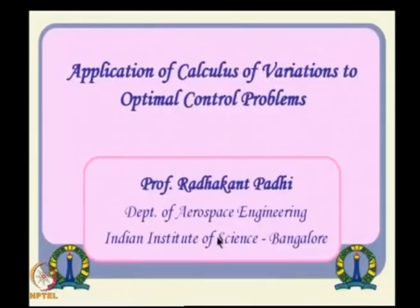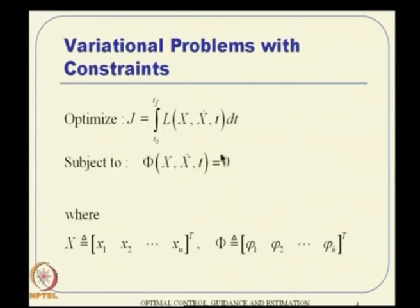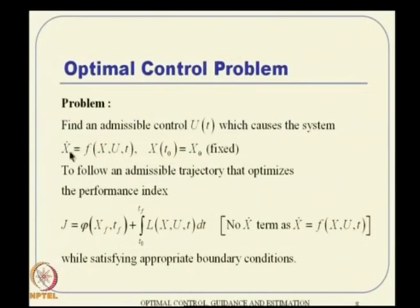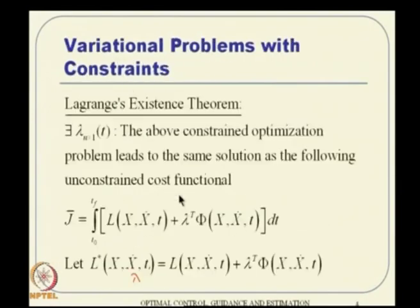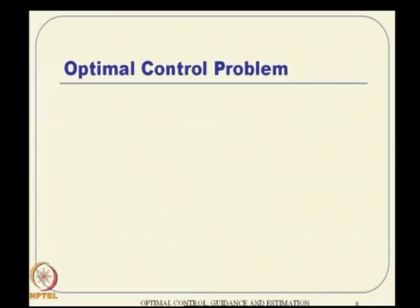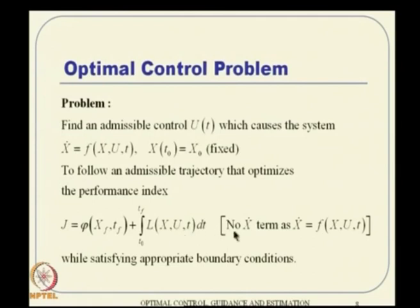Notice that the constraint equation contains an x-dot term. The cost function in calculus of variations also contained x-dot. However, the cost function in the optimal control setting typically does not contain x-dot in most cases — x-dot is accounted for through the state equation.